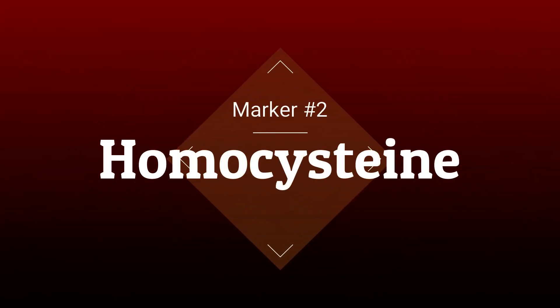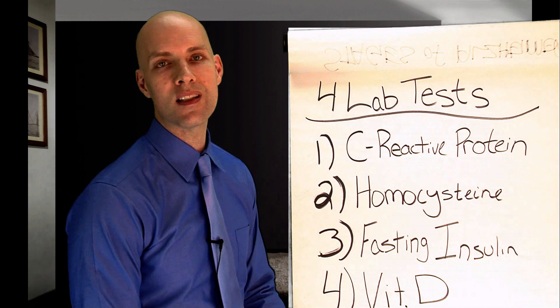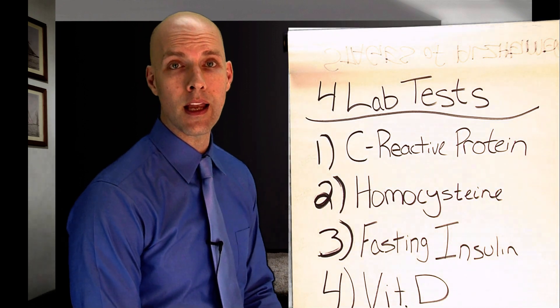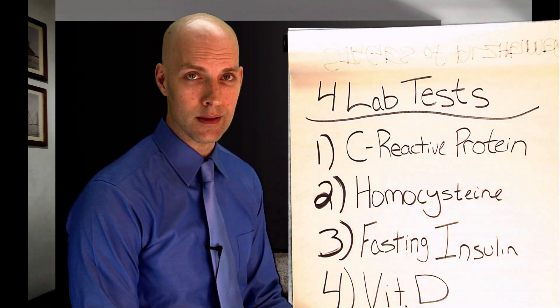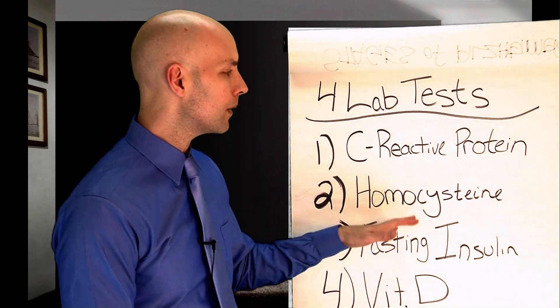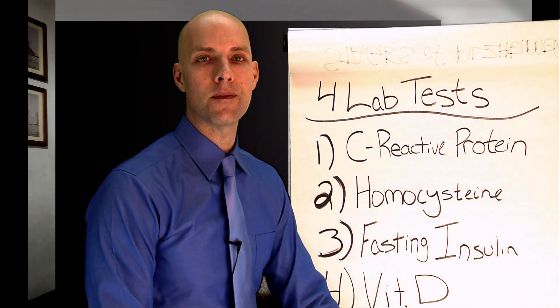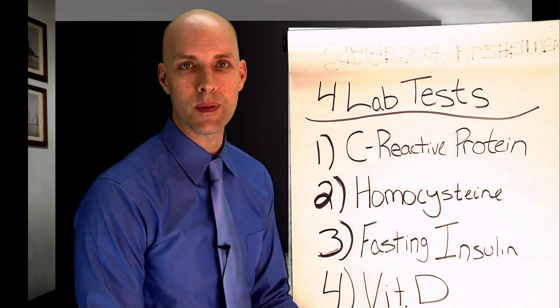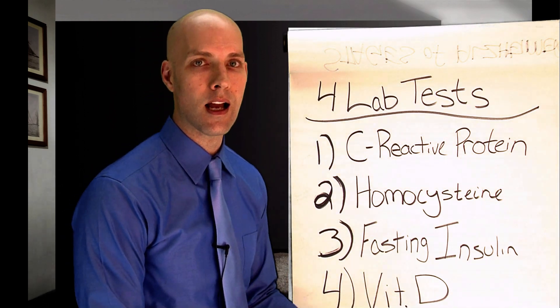So marker number two is homocysteine. Homocysteine is an amino acid in the body and it's a building block for proteins. And what we know is that when homocysteine builds up in the body, that's a sign of deficiency of certain B vitamins, specifically B6, B9, and B12.